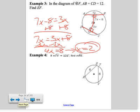It says find the length of EF, so make sure you answer that question. Plug 2 back in: 3 times 2 is 6. That's the answer we're looking for.